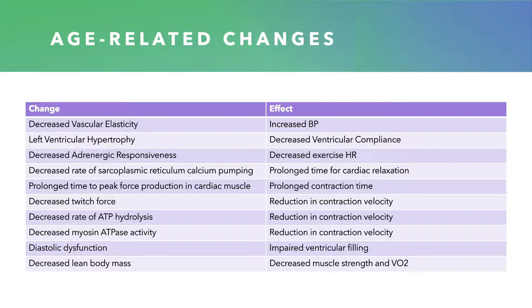We also have decreased responsiveness to the sympathetic nervous system — decreased adrenergic responsiveness — which leads to decreased heart rate. So we have decreased preload and decreased heart rate, the two variables that influence cardiac output, and they've both been decreased. We also have a decreased rate of sarcoplasmic reticulum pumping. Calcium is stored in the sarcoplasmic reticulum, and in order for a muscle to relax, you need to pump all the calcium out of the cytoplasm back in. If you can't do that as quickly, you have a prolonged time for cardiac relaxation, which means the heart won't fill as well. Also as we age, there's a prolonged time to peak force production, meaning a longer contraction time.